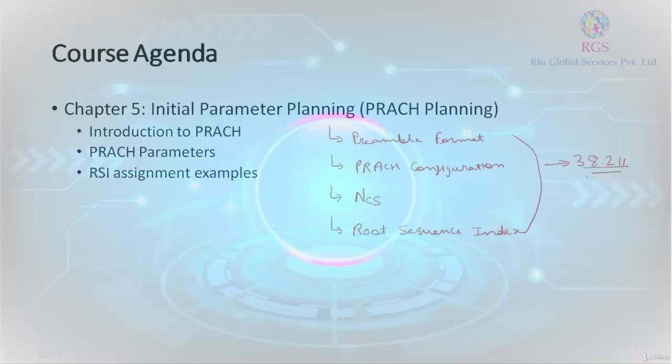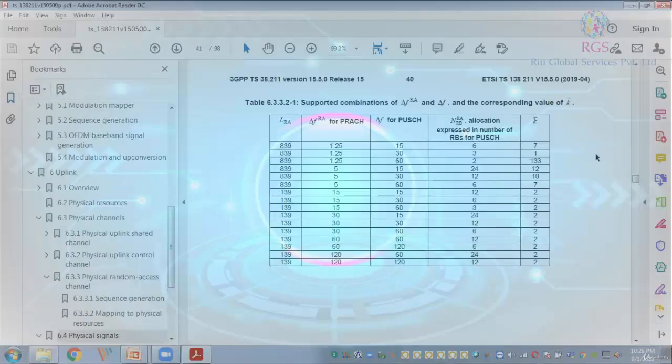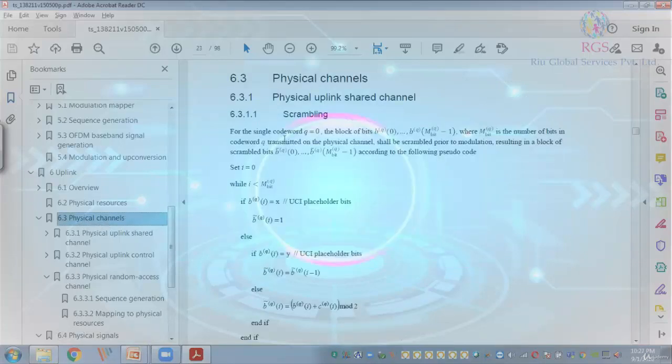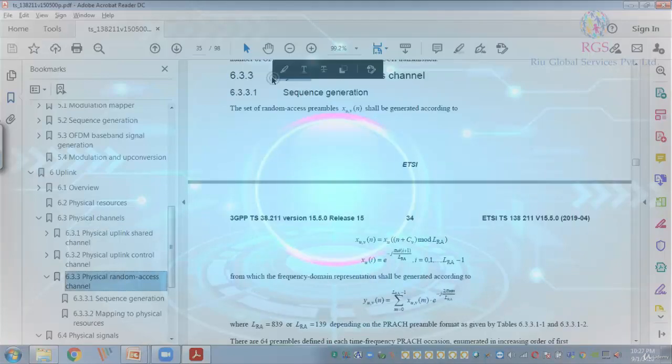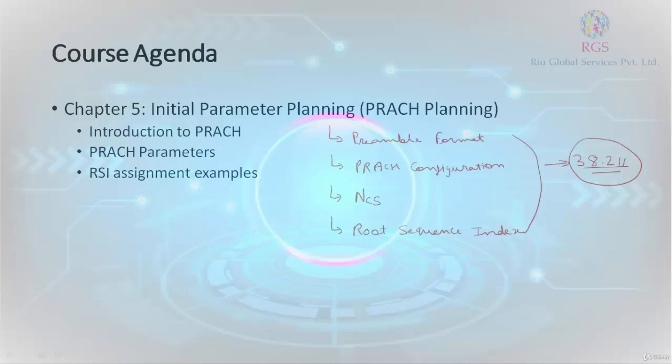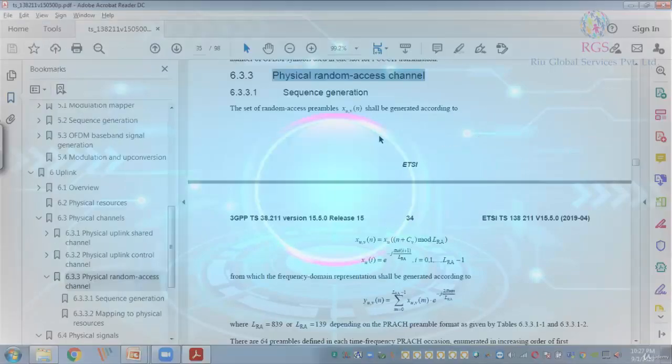Let me show you these parameters from this specification itself. This is the specification TS 38.211 and in its chapter 6.3.3 we get the information about the physical random access channel. So what is the first parameter? It is called preamble format. Let's have a look at preamble formats.